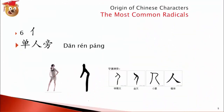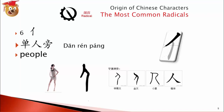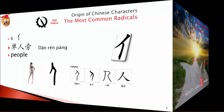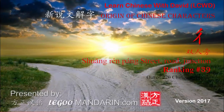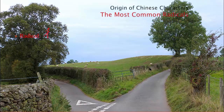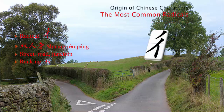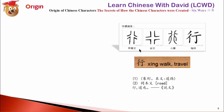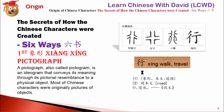单人旁 means single person radical. It's different from 双人旁, which is the double person radical. 双人旁 means the road going straight or a junction — like a junction.